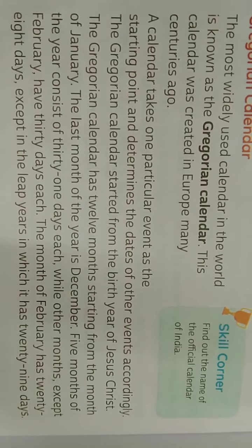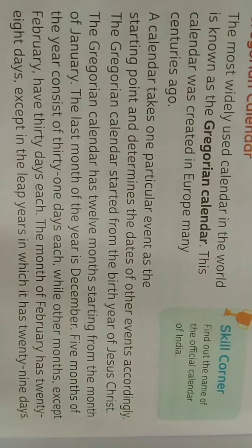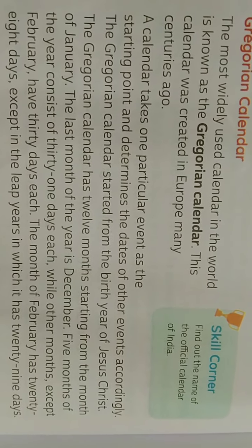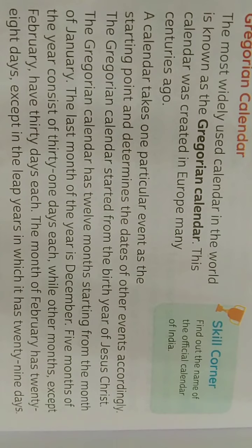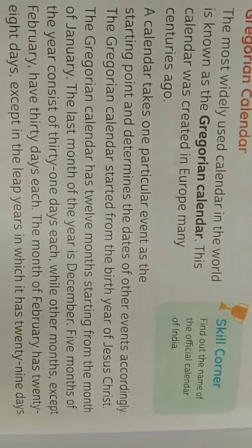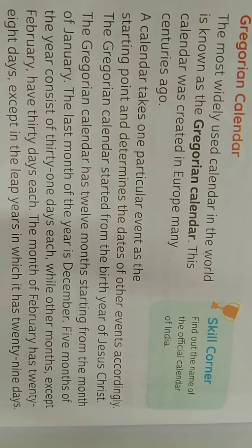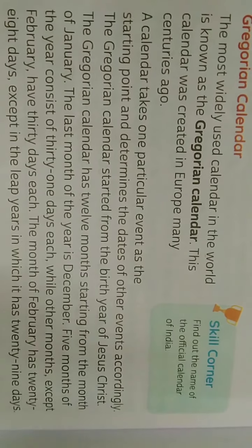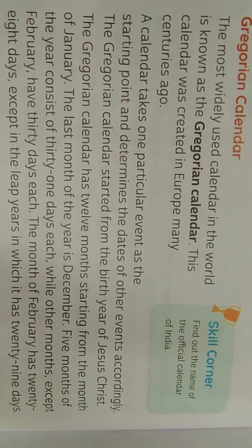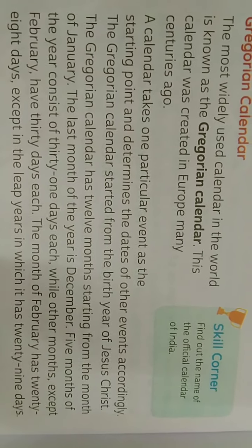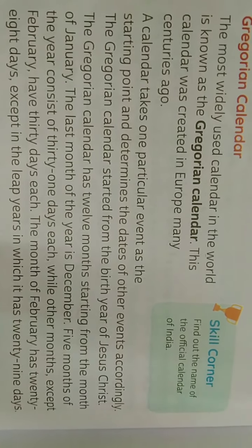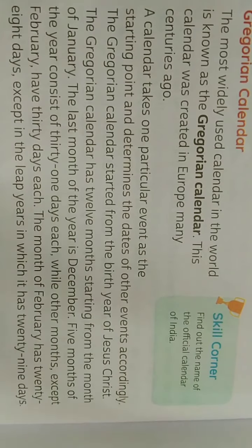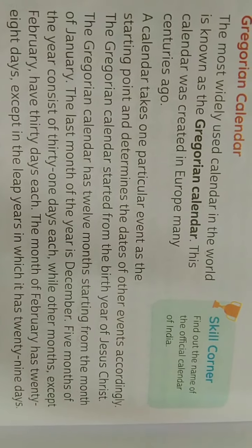Five months of the year consist of 31 days each. Other months except February have 30 days. February has 28 days, but in a leap year it has 29 days.